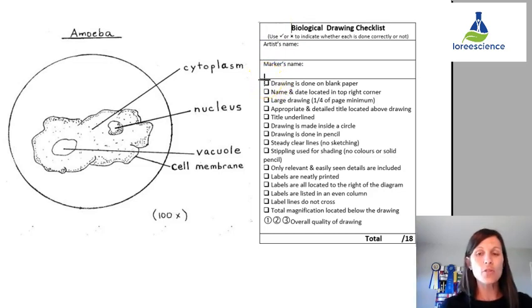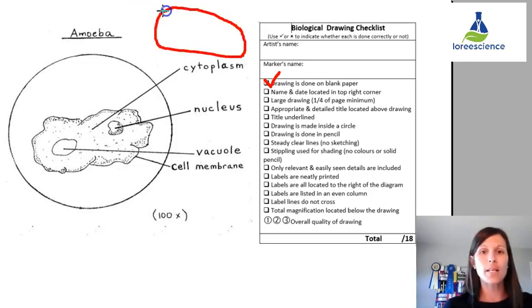So first thing for a biological drawing is it must be done on blank paper. In this case, yes, definitely done on blank paper. Is the name and date located in the top right corner? No, the name and date should be somewhere up in here which it is not so we cannot give them a mark for that.